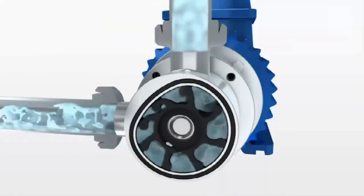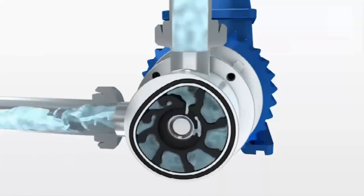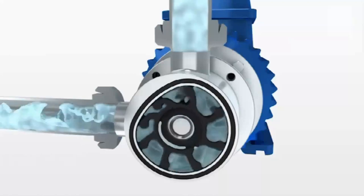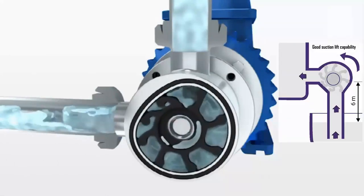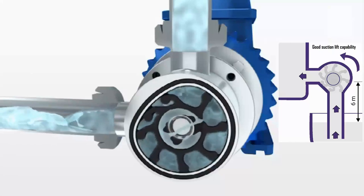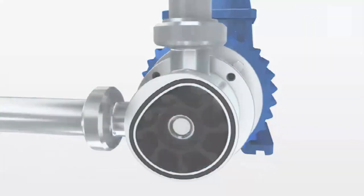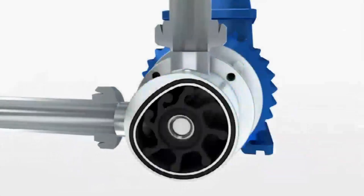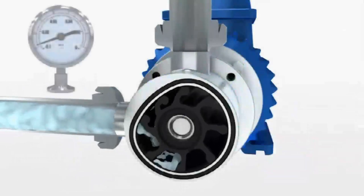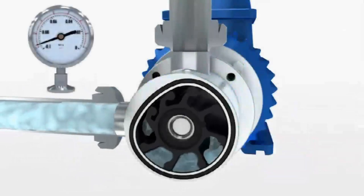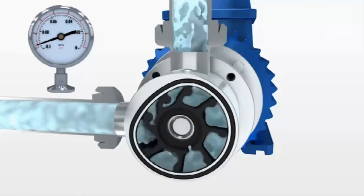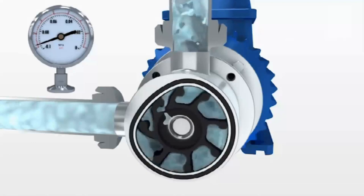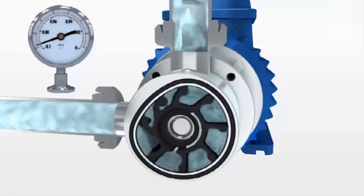A special characteristic of the flexible impeller pump is that it is able to maintain a tight seal between the impeller and the pump casing, giving it good suction lift capability. The gentle pumping mechanism means that shear-sensitive fluids can be handled without damage to their structure — for example, food products such as olives that can be squashed, or cream that can become thicker when agitated.